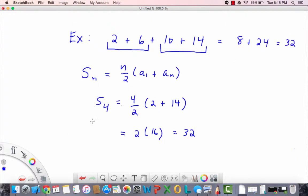But, and this is a very key point, notice that if we add the outer terms first, we get 2 plus 14, which is 16. And then if we add the inner terms, we get 16. And 16 plus 16 is 32.